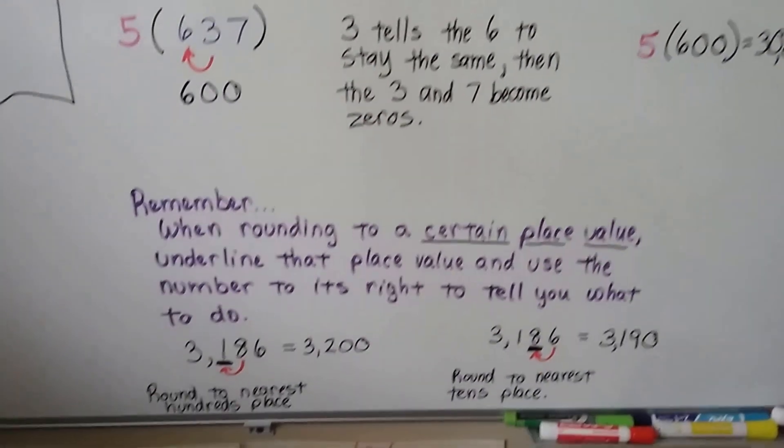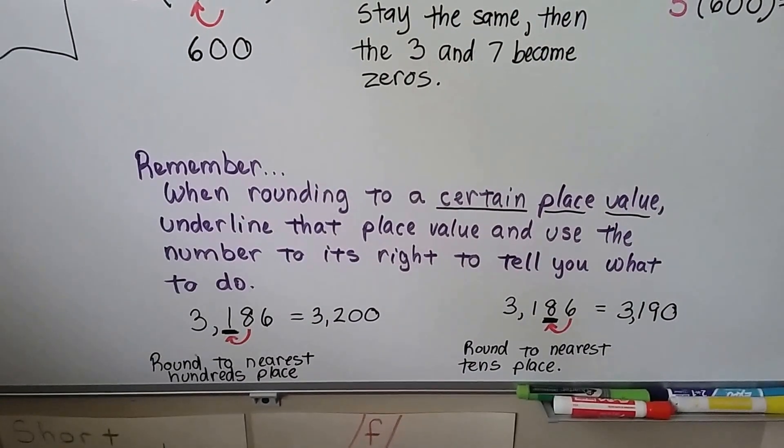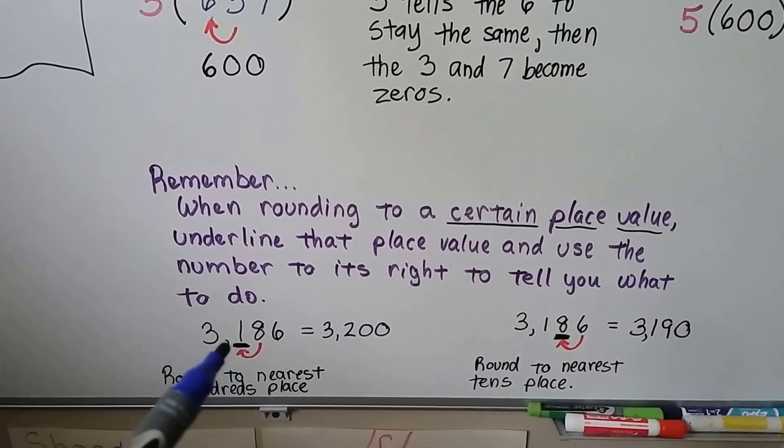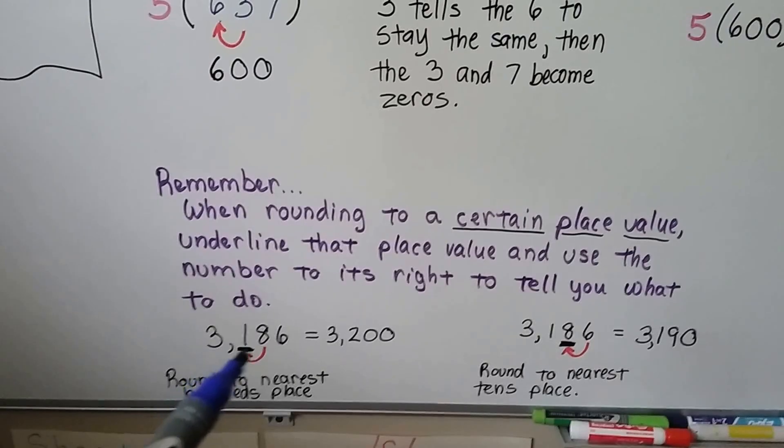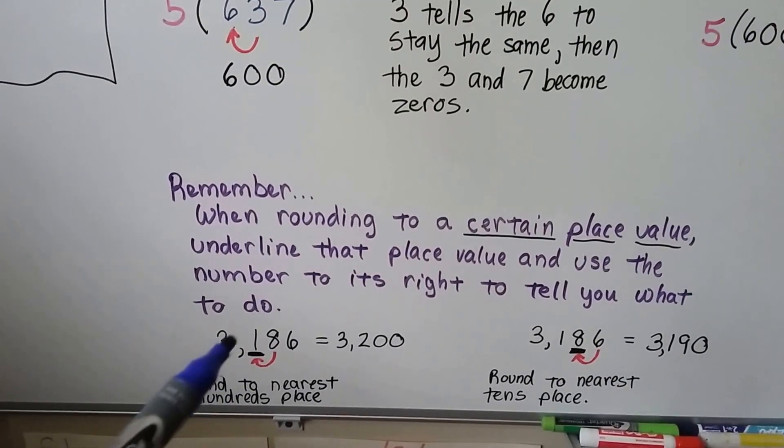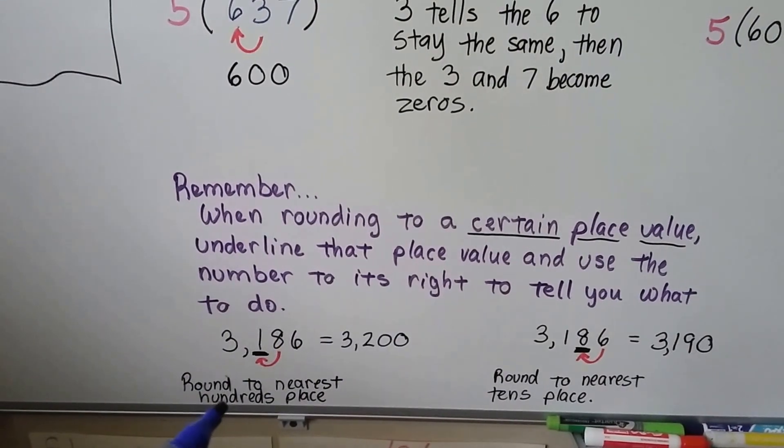Now in regular rounding, not front-end rounding, just regular rounding, when rounding to a certain place value, we underline the place value that it says that we're rounding to so that we know where we're at. So if we're rounding 3,186 to the nearest hundreds place,